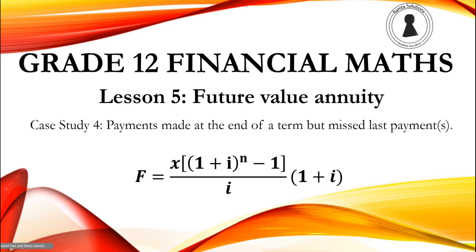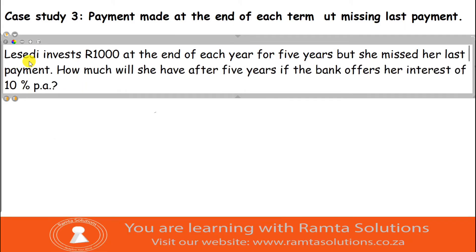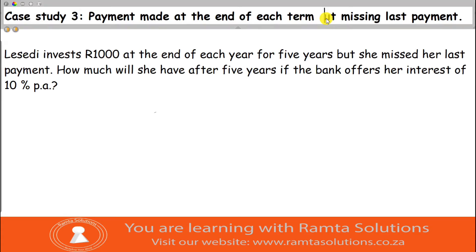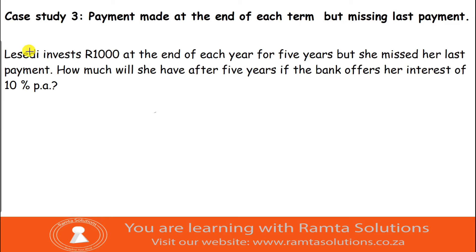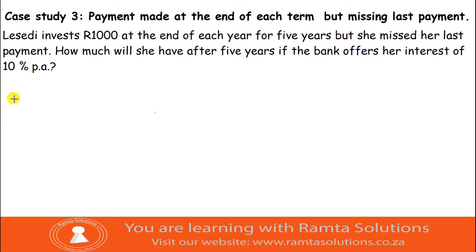Case 34 says payments are made at the end of a term but the last payment is missed. Our case study involves Cindy: she invests R1,000 at the end of each year for five years, but she missed her last payment. How much will she have after five years if the bank offers her interest of 10% per annum?